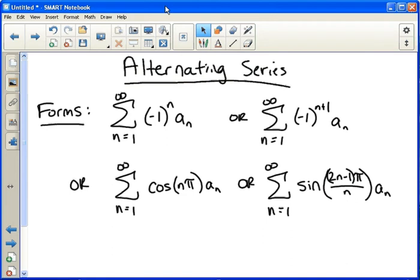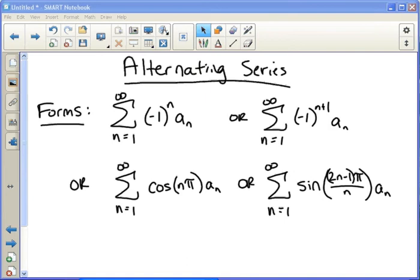We have another type of series called alternating series. An alternating series basically alternates between positive and negative terms. Now there are lots of different forms you see here. The first two on top are the most common, by far. You'll see them 98% of the time. The negative one to the n times other stuff, so the an can represent anything else, and then negative one to the n plus one times other stuff. I went ahead and put these other two down here because they do pop up every now and then.